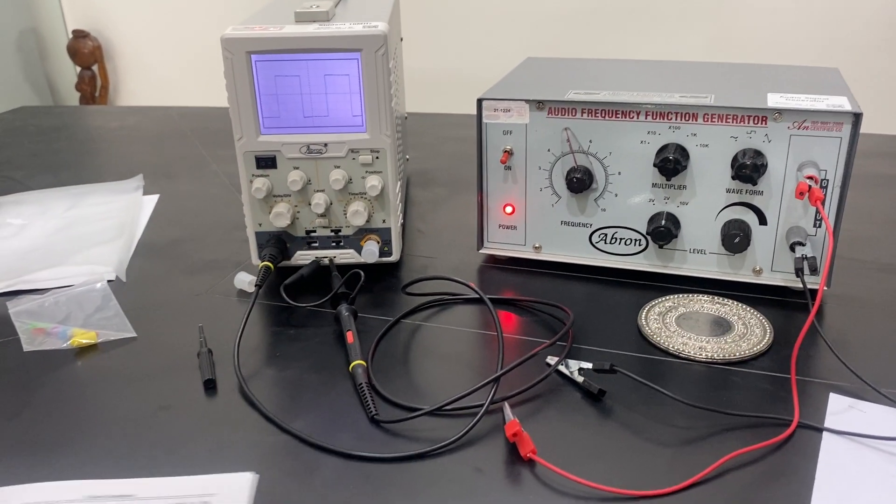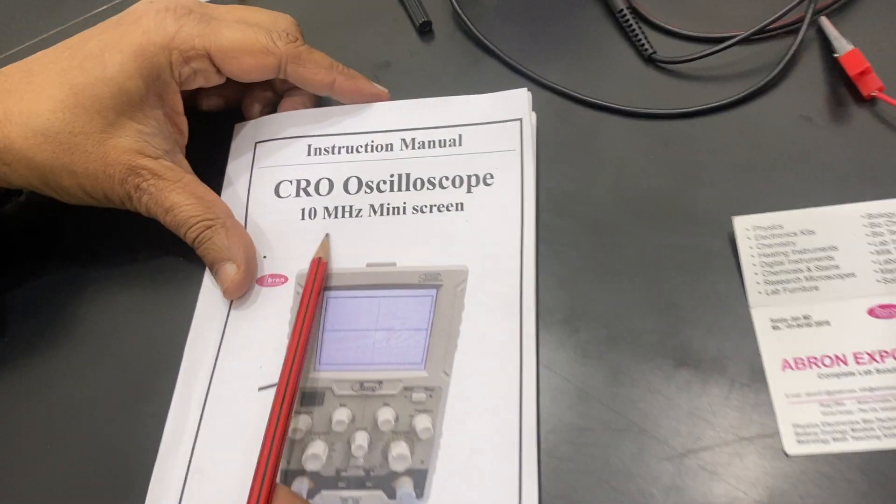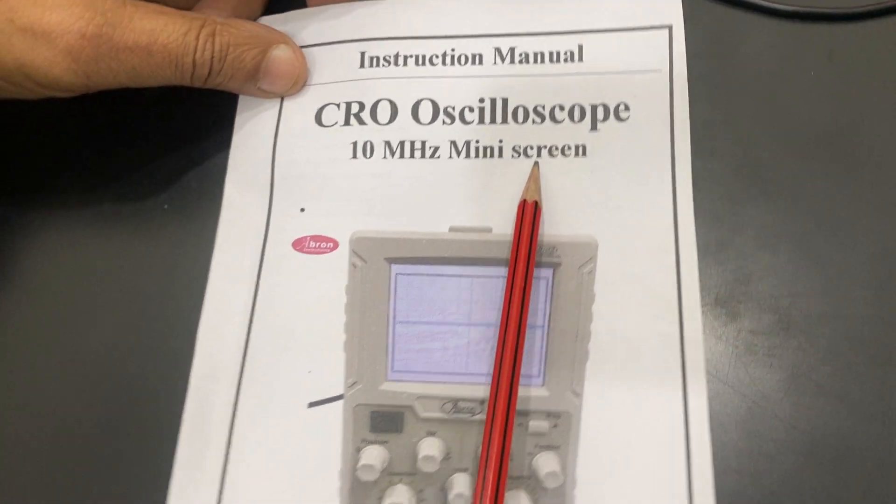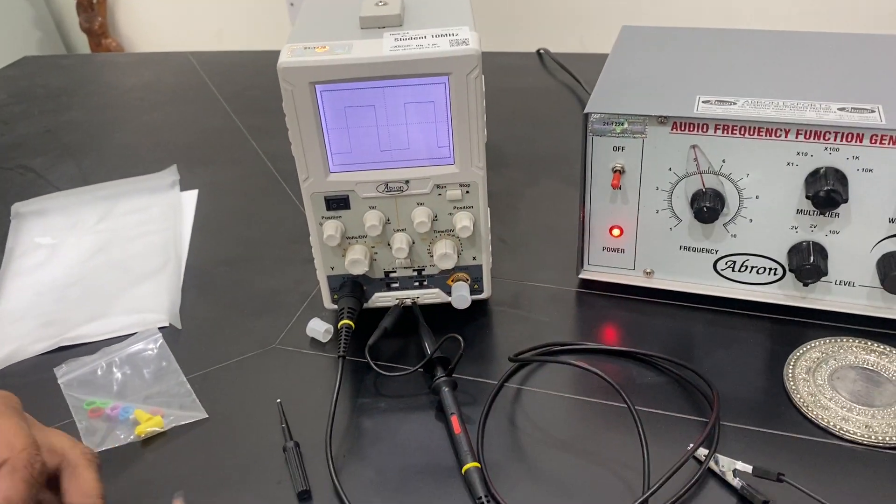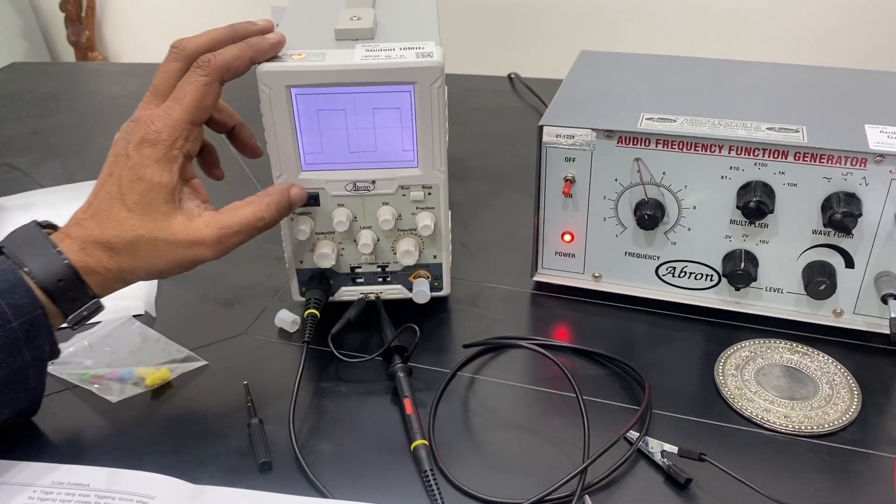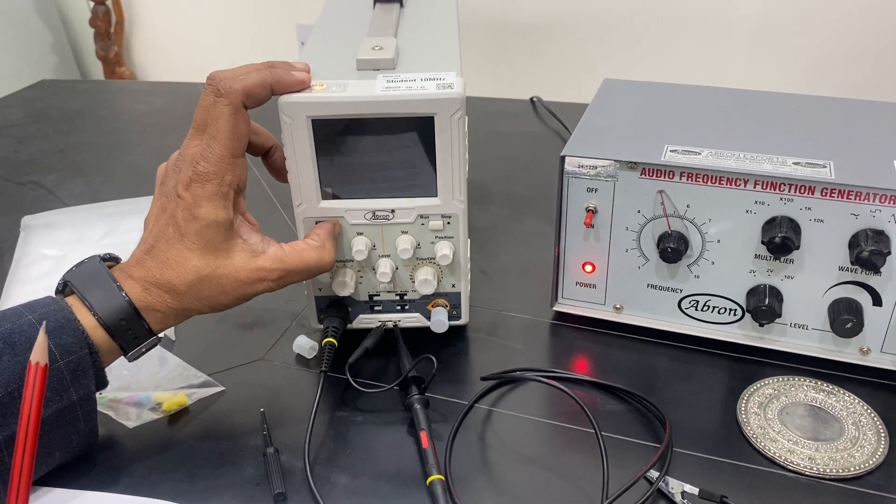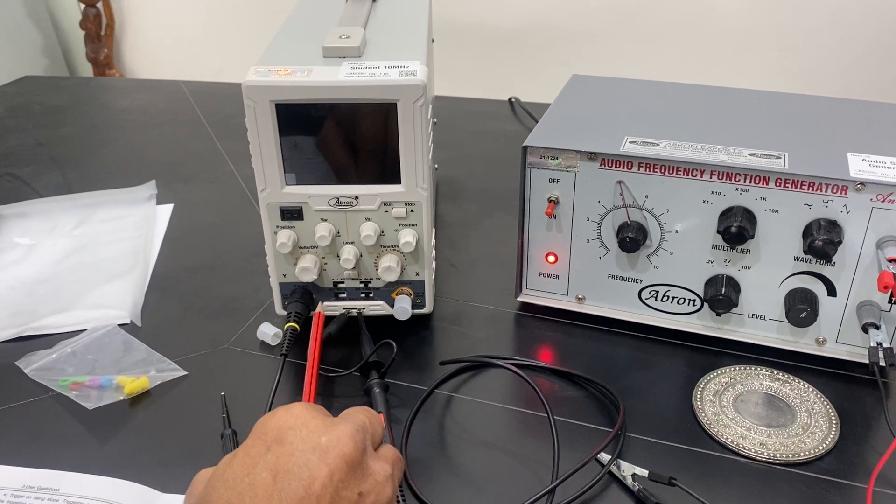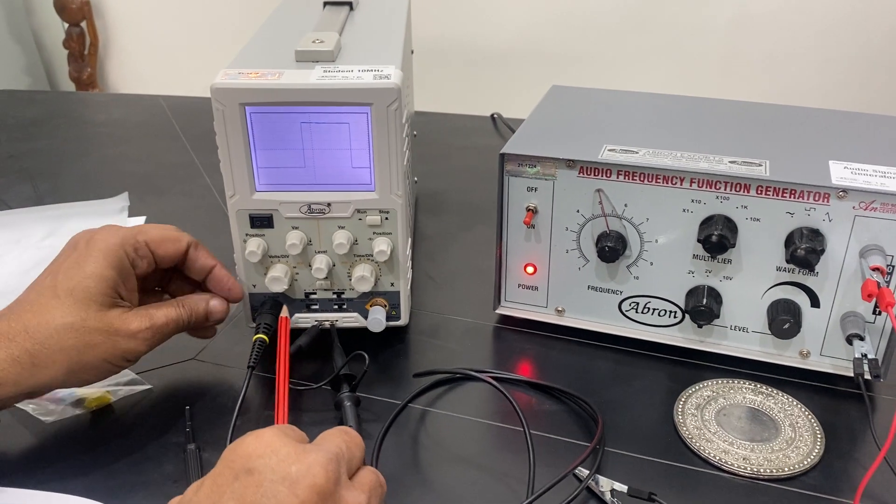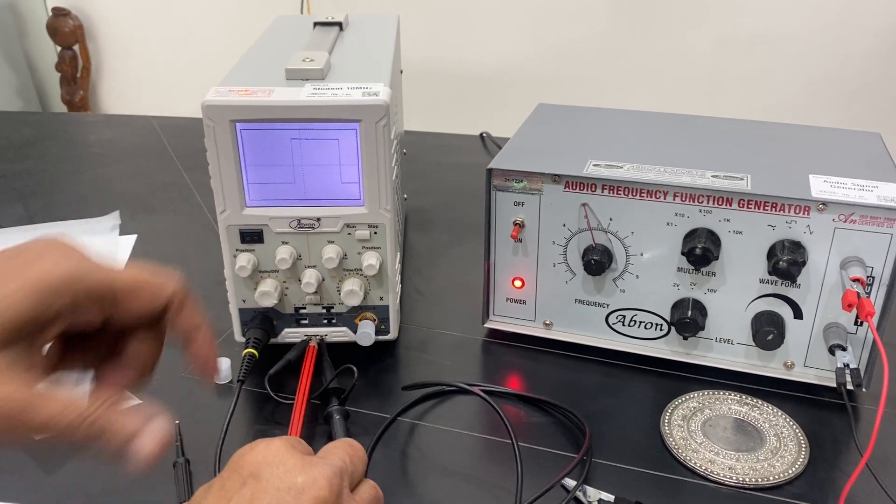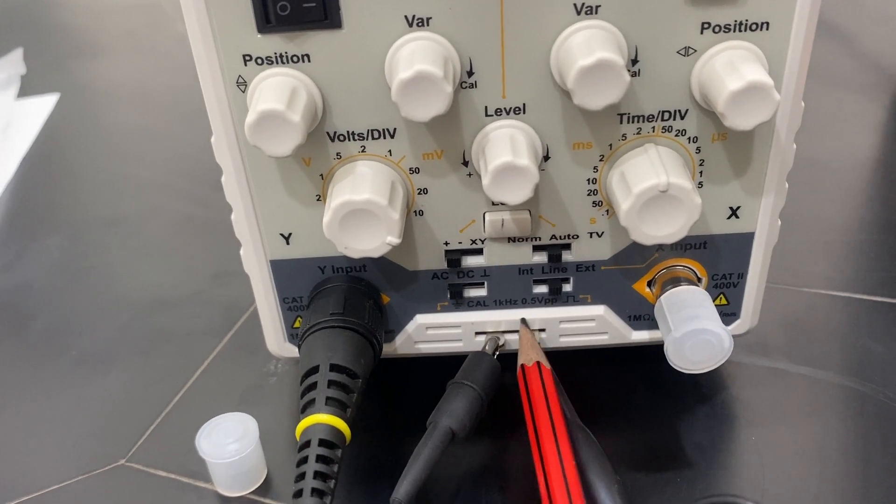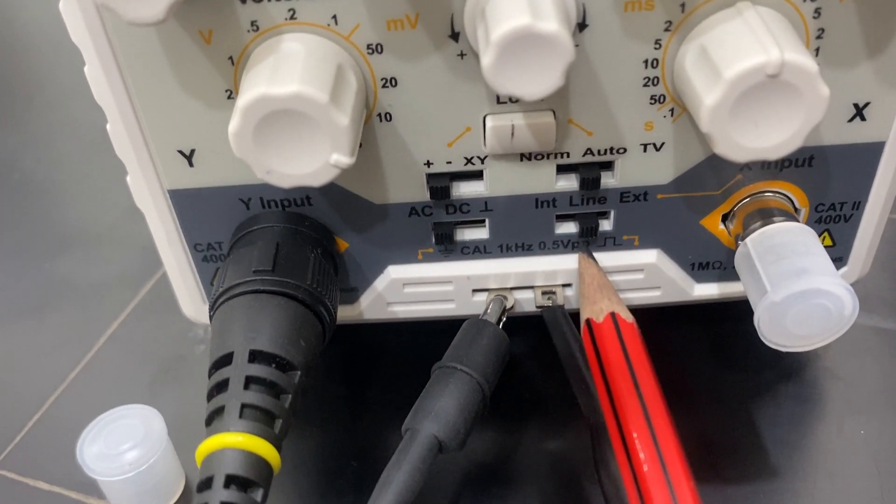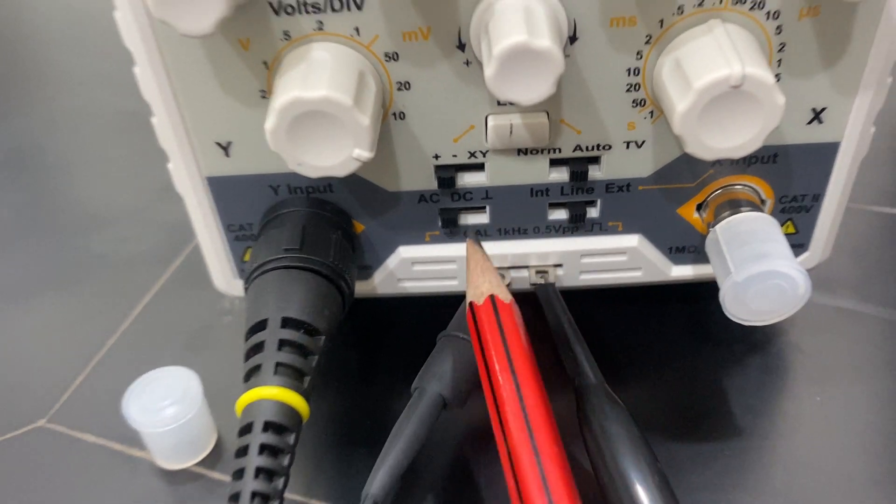Here everyone, this is Abron's oscilloscope which is 10 megahertz mini screen, 2.5 inch by 3 inches. This is the on-off switch. Once we start it, this external probe is to be set to the external. There is one built-in signal, one KCS and one 5.5 volt PPM which is the voltage.